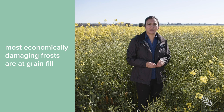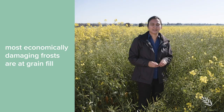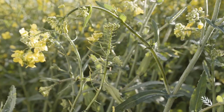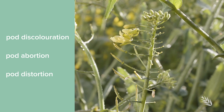The most economically damaging frost in canola occurs at the end of flowering through to the grain development phase, when pods are extending and grains are filling. You can see some pods turning yellowish green or more yellow, which is a symptom of pod abortion.